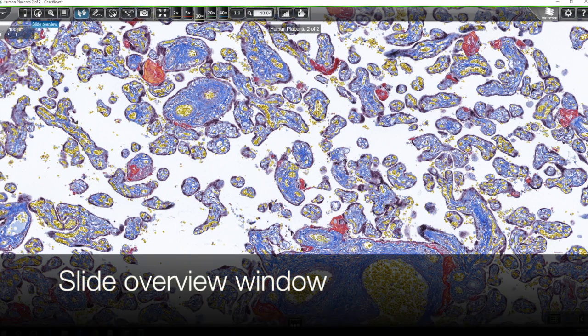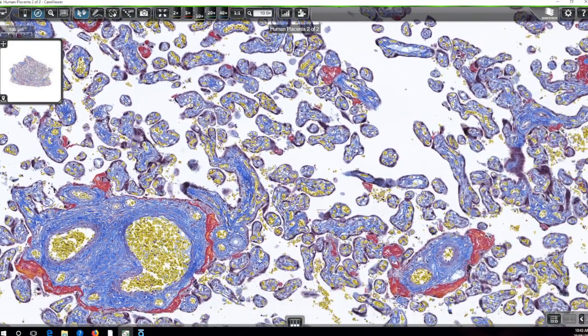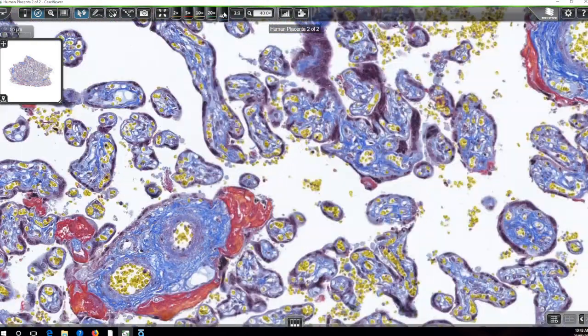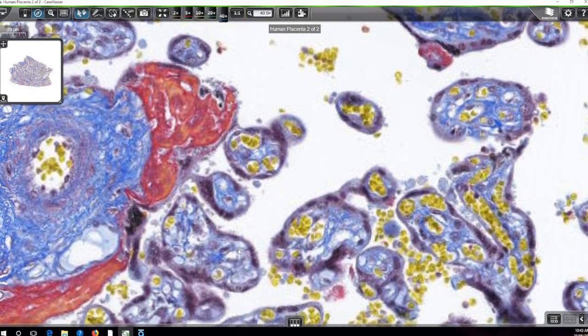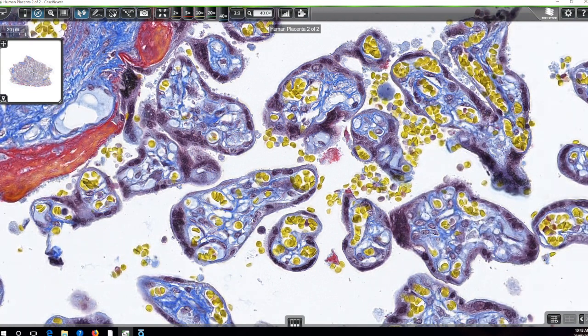Now so that we don't lose where we are, there's a nice option to bring up a slide overview window. And the value of that is at any time as you're scrolling around, you can see in the left hand window there exactly where you are in relation to the whole surface of that tissue.